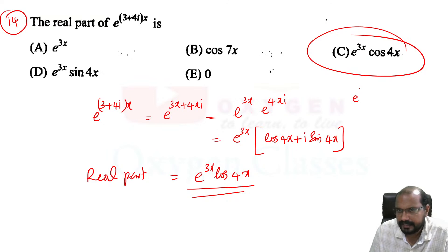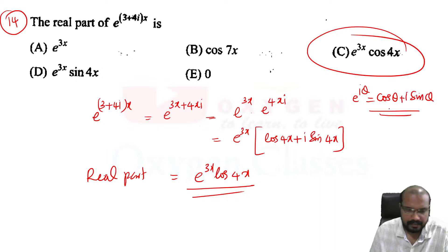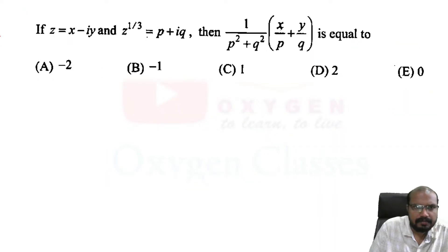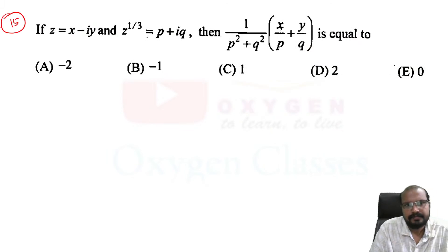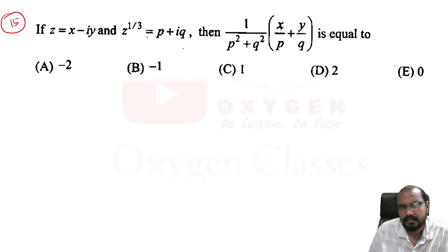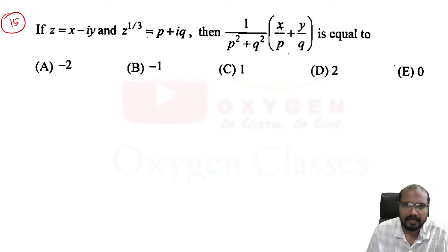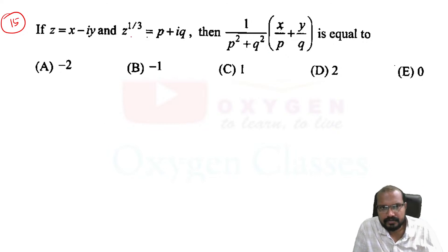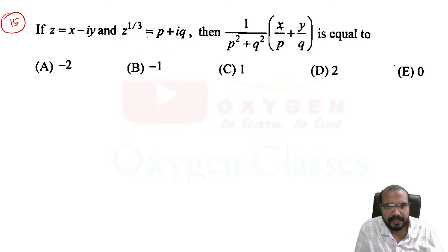Now considering z raised to 1/3, where p plus iq equals 1 divided by (p² + q²) times (x/p + y/q). Here z raised to 1/3 relates to the cube root of unity, giving p and q values. We have z equal to x minus iy.